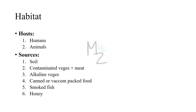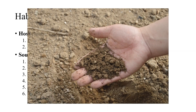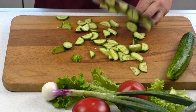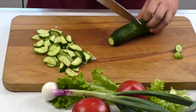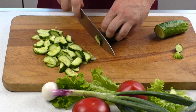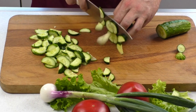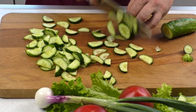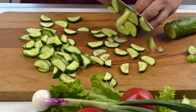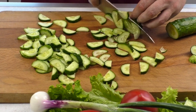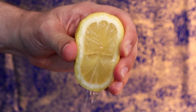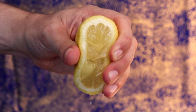Habitat: humans and animals are the hosts. Spores are widespread in the soil and can also be found in contaminated vegetables and meat. An important high-yield point is that Clostridium botulinum survives better in alkaline environments compared to acidic ones. If a vegetable is alkaline, it may harbor C. botulinum. Changing the pH to acidic — for example by adding citric acid from lemon — will prevent bacterial survival and human infection.